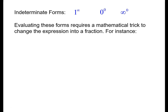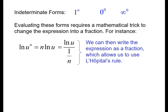What about indeterminate forms with exponents? Evaluating these requires an extra algebra step. Recall that the natural log of u to the n equals n times the natural log of u — that's the power rule for logarithms. We could also write this as natural log of u divided by 1/n to get a fraction. Also note that any limit of f(x) equals e to the natural log of that limit, since e and ln are inverses of each other.